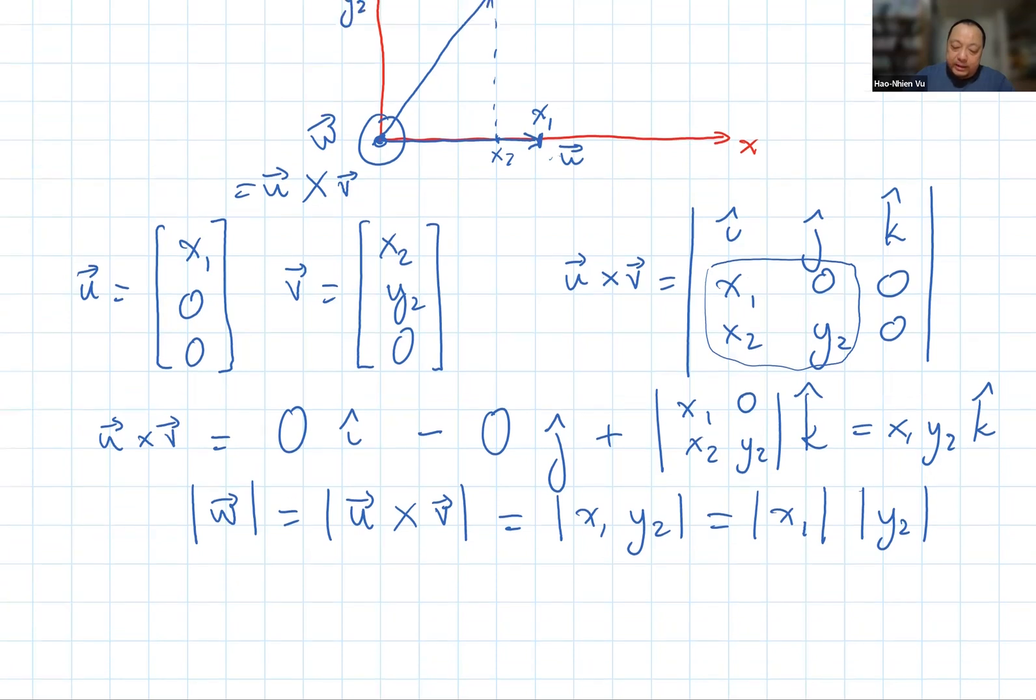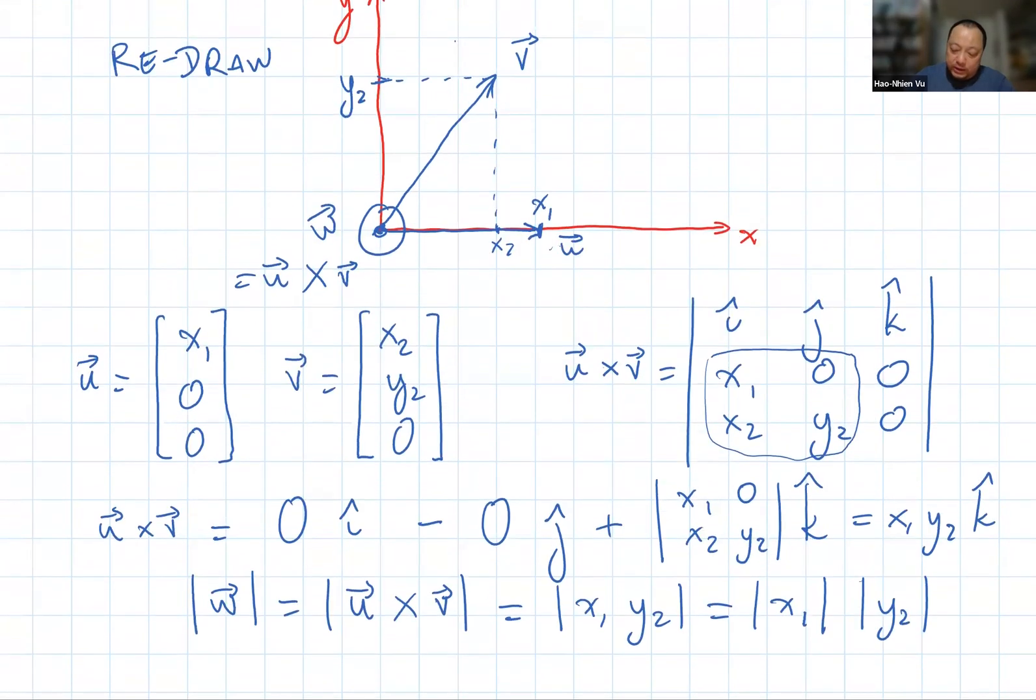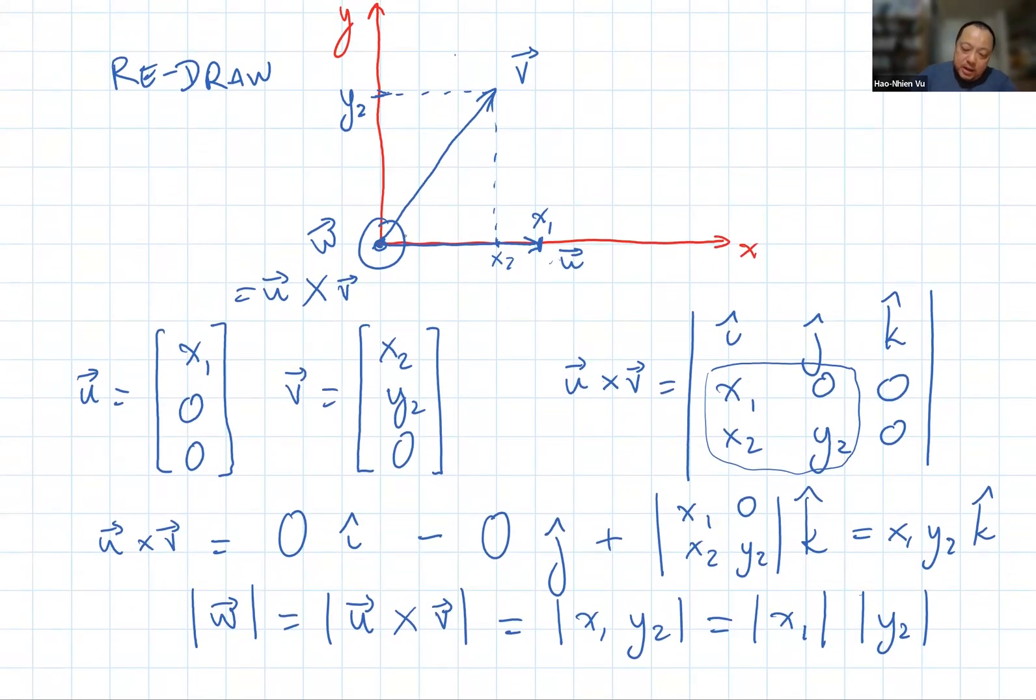Let's now take a look back at this picture and see what x1 is. x1 is this length right here. x2 is no longer in the picture, so let me erase that. And y2 is this length here, which is also this length there. And if I draw the parallelogram, then x1 is the base and y2 is the height of the parallelogram.